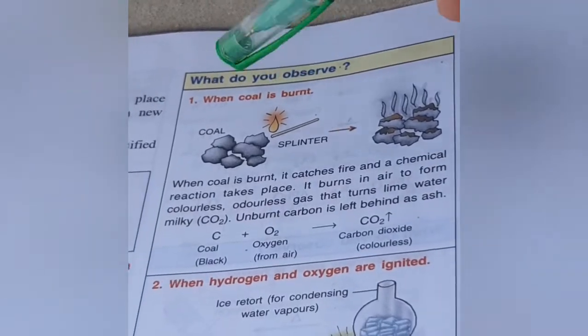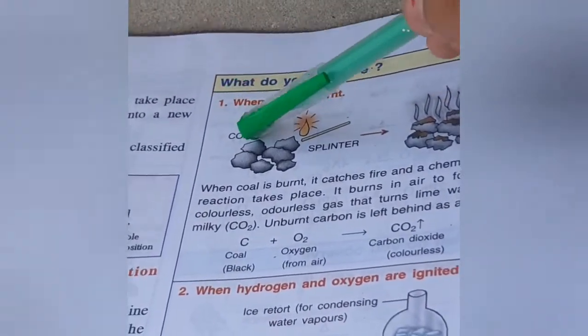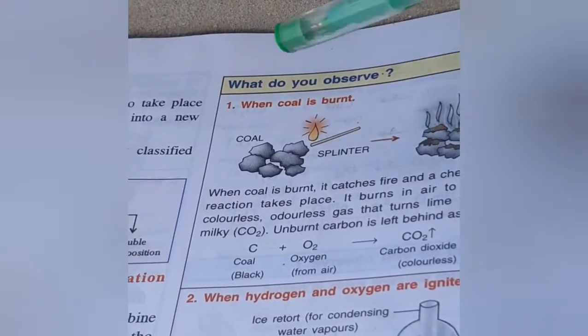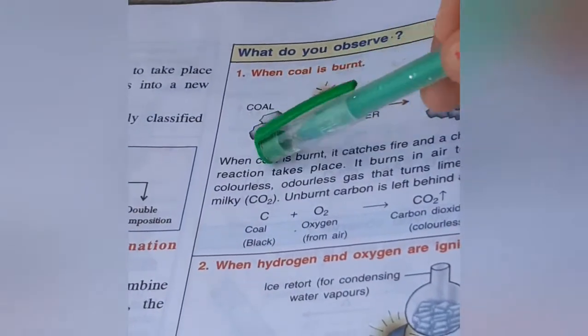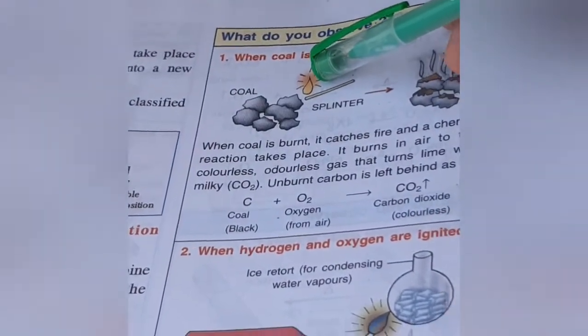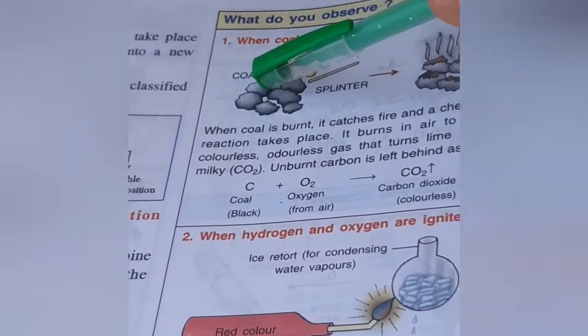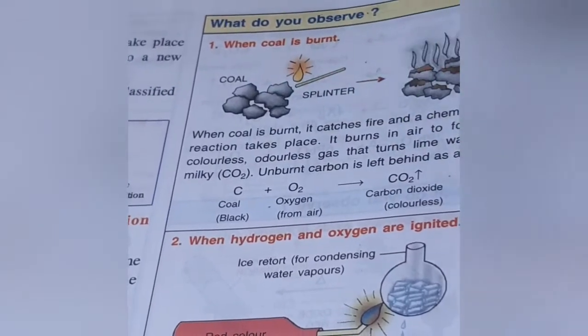What do you observe when coal is burned? When coal is burned, it catches fire immediately and a chemical reaction takes place. When coal burns in air, it forms colorless gas that turns lime water milky.